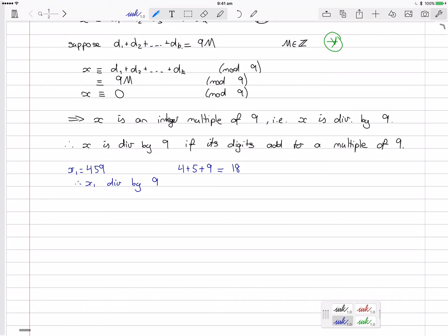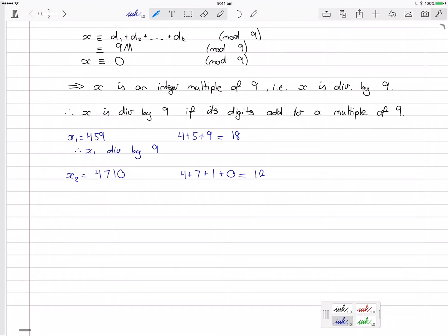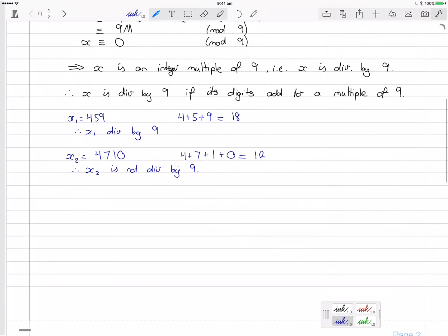Let's try another example. x2 equals 4710. Well, adding up the digits, 4 plus 7 plus 1 plus 0, that would be equal to 5 plus 7. So that's 12. Ah, but 12 is not a multiple of 9. So therefore, we can say that x2 is not divisible by 9. And you might want to check that on a calculator for yourself, for confirmation.